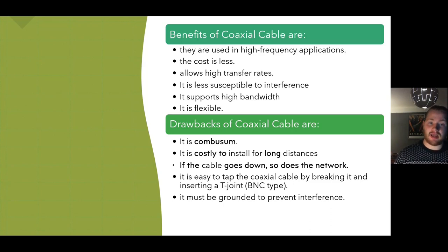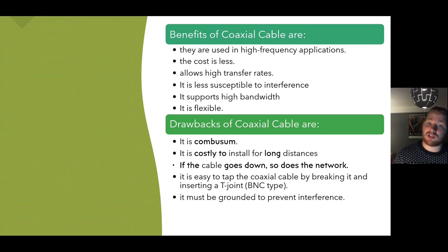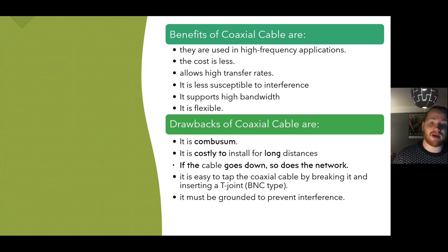The drawbacks are that coaxial cables are quite cumbersome and costly to install for long distances. If the cable goes down, so does the network, as they have to be a single line across the network. It is also quite easy to tap into a coaxial cable by breaking into it and inserting a T-joint, and it must be grounded to prevent interference.